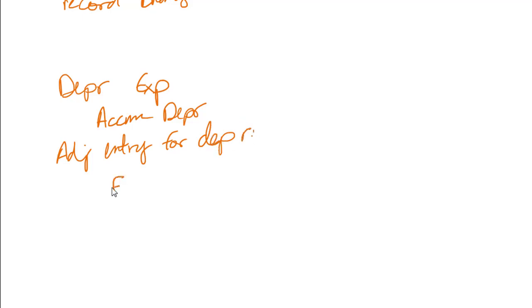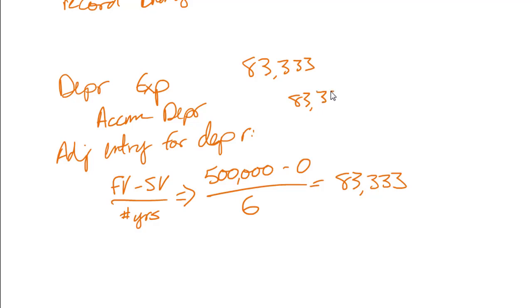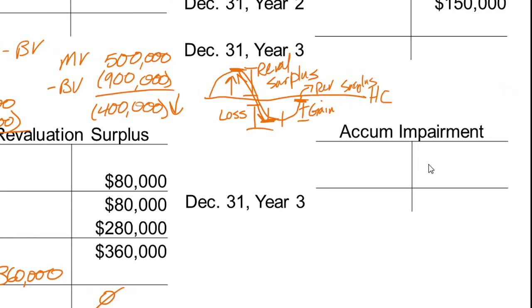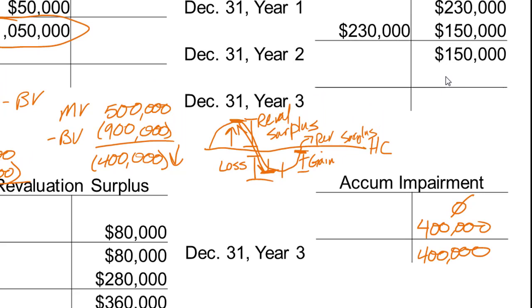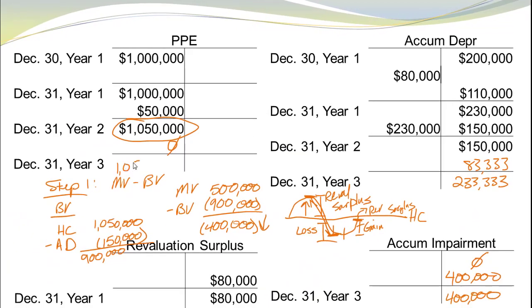We take fair value minus salvage value and divide by the number of years. Fair value is $500,000, salvage value is zero, and we're now down to six years, giving us depreciation of $83,333. Updating the T-accounts: revaluation surplus is wiped out to zero; accumulated impairment goes from zero to $400,000; accumulated depreciation gets $83,333 added, ending at $233,333; and PP&E keeps the same $1,050,000 balance.